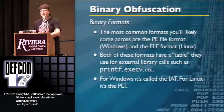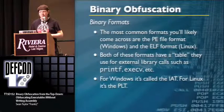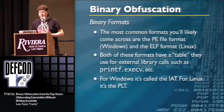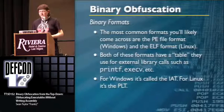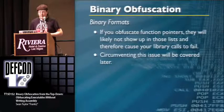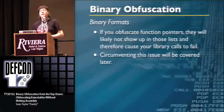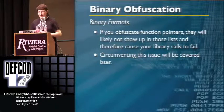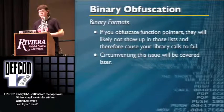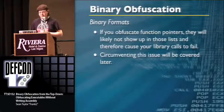The most common file formats you'll encounter are PE and ELF. Both have tables for external library calls — printf, execv, etc. For Windows it's the IAT; for Linux it's the PLT. If you obfuscate function pointers, they're likely not going to show up in these tables because you're not hard-coding the data — which can cause problems we'll cover later.